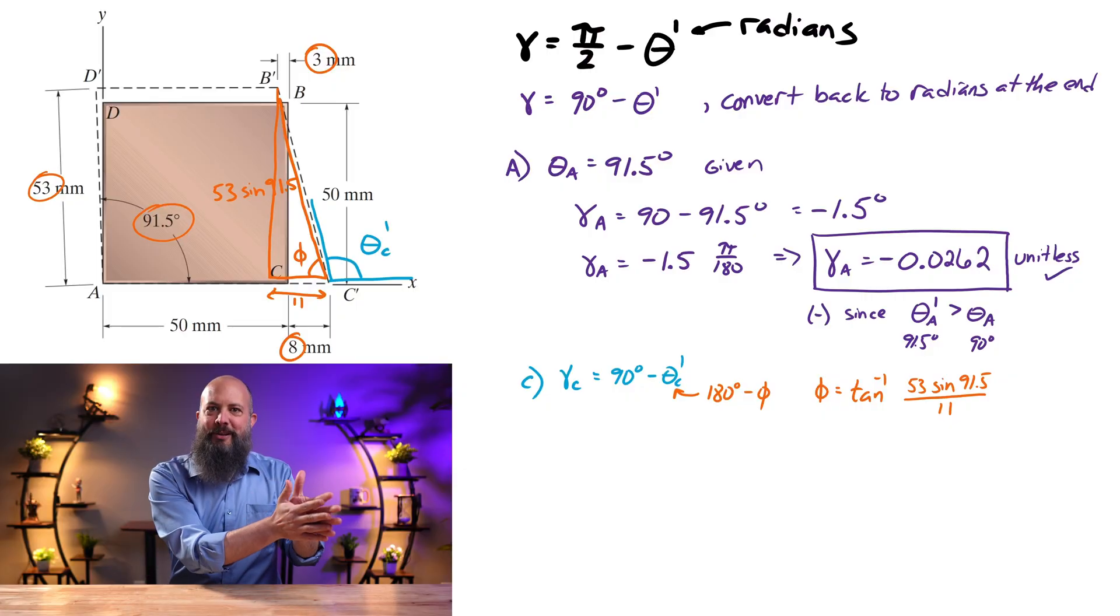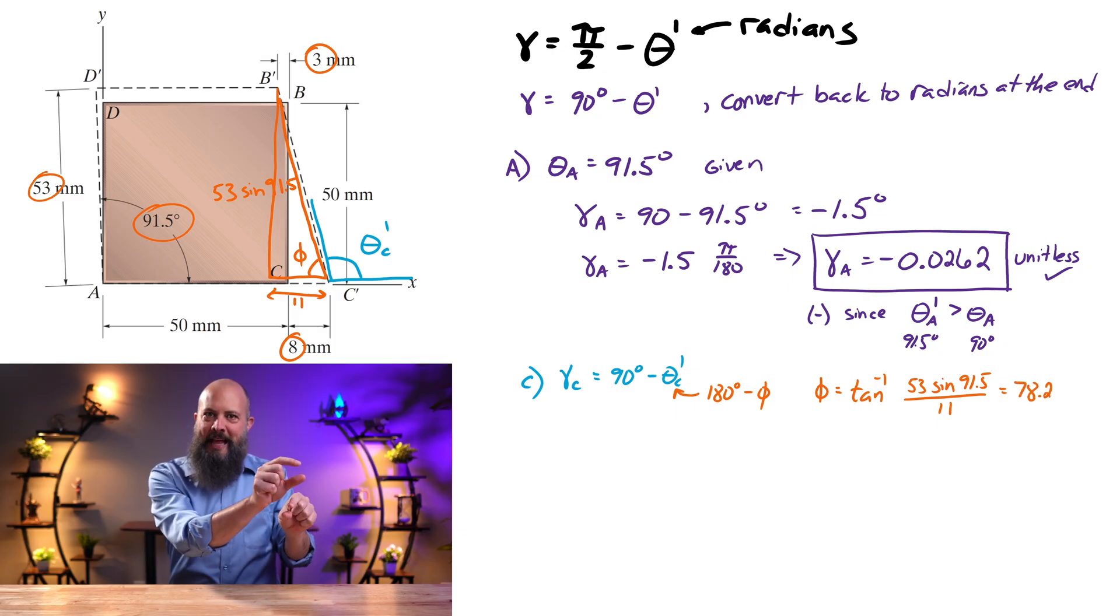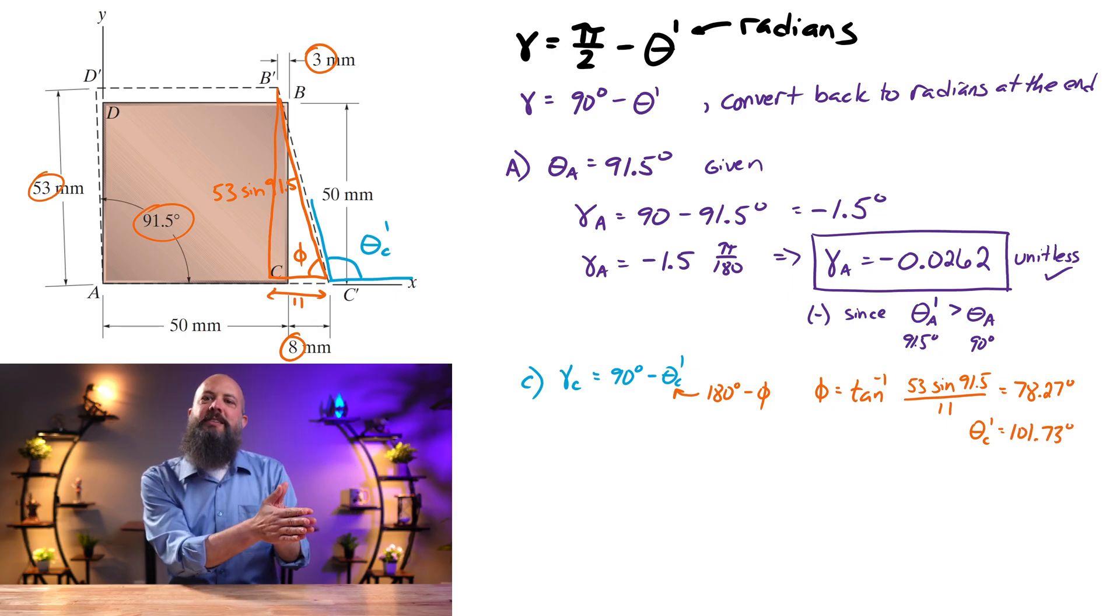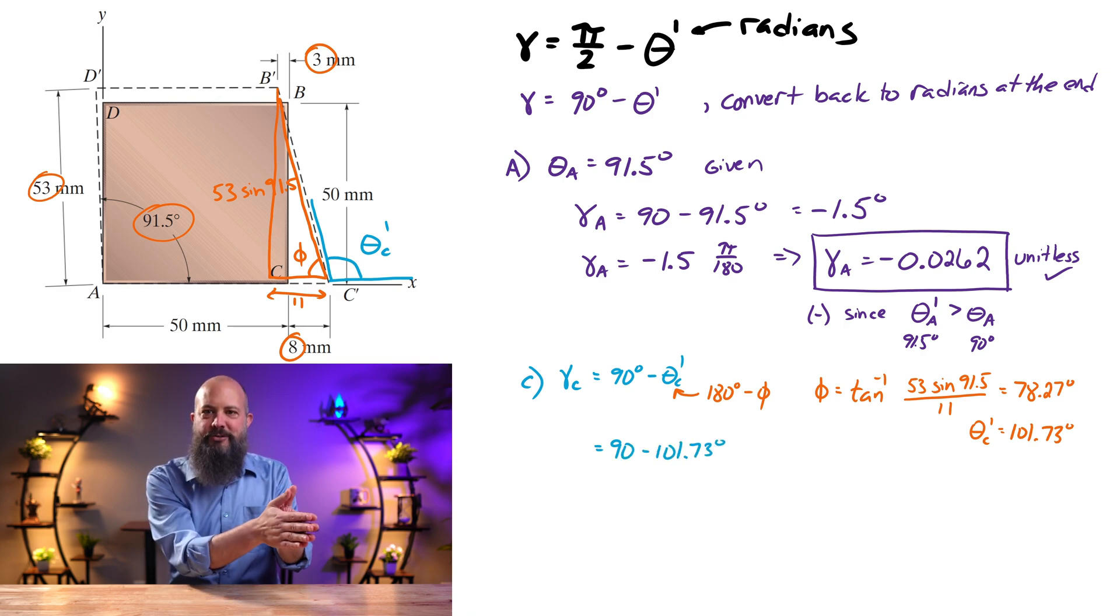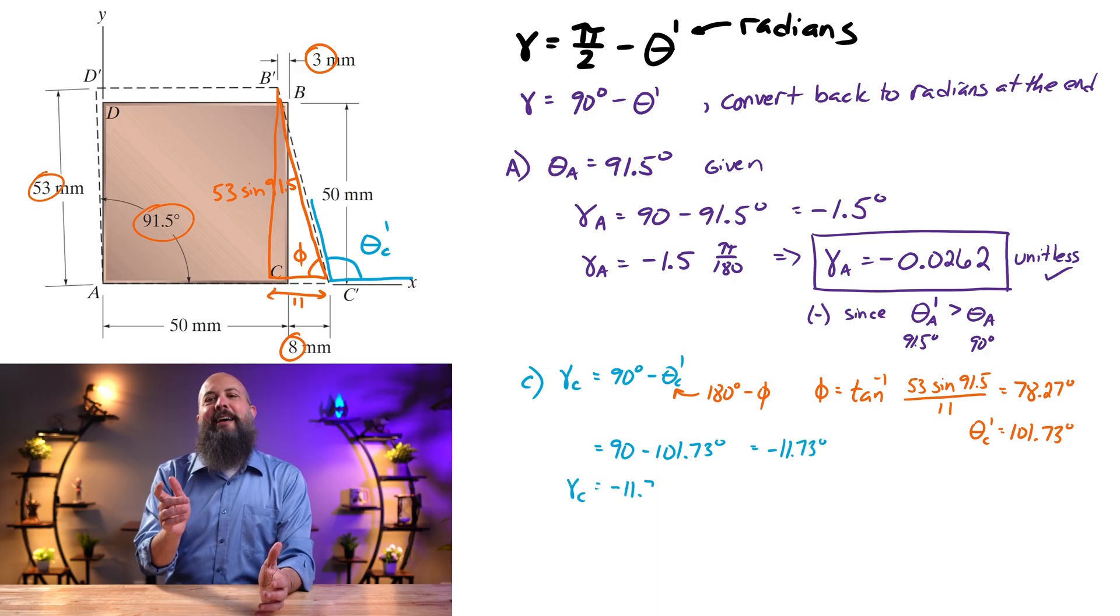So back to the new triangle I've drawn, I'm going to call the angle phi, this small angle on the inside, so that tangent of phi would be opposite over adjacent, would be 53 sine 91.5 over 11. So I make that an inverse tangent, find that this angle phi is 78.27, and I can subtract that from 180 to get my theta prime C, 101.7 degrees.